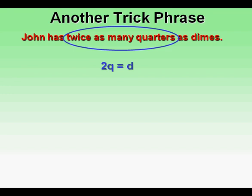But we really need to think about this. What does twice as many quarters mean? It means that the number of quarters is equal to twice or 2 times the number of dimes. So the 2 goes in front of the d and not the q, and so the real equation for this sentence is q equals 2d.